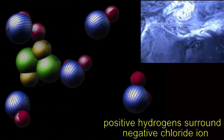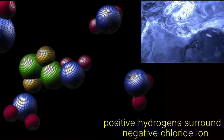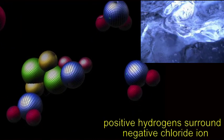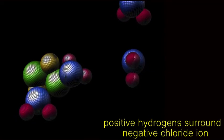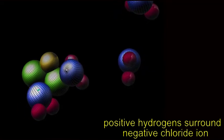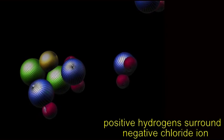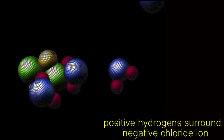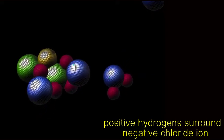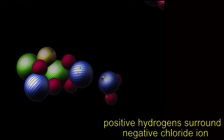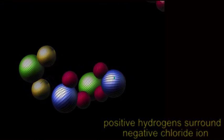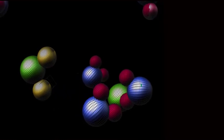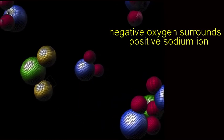If ions or polar molecules are introduced into water, the water molecules can form hydration spheres where the positive hydrogen portions of water molecules can associate themselves with the negatively charged portion of the solute, while the oxygen atoms, being slightly negative, can associate with the positive portions of the solute.